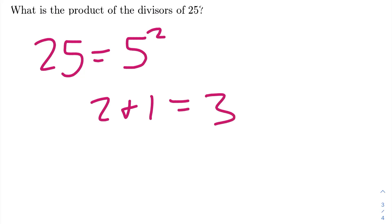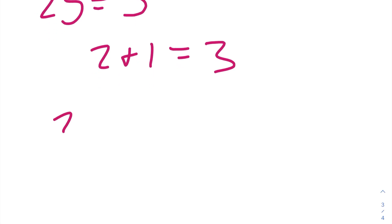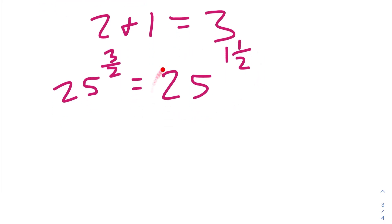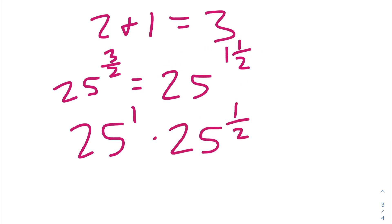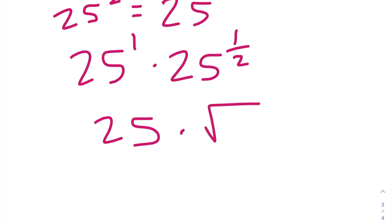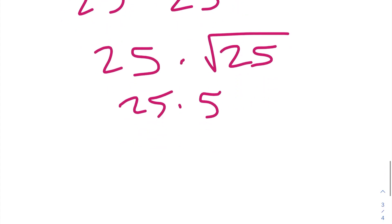If you haven't seen my video on finding how many divisors a number has, I'll leave the link in the description. So we know 25 has 3 divisors. We take 25 to the power of 3 over 2, which is the same as 25 to the power of 1 and one half. We can split this into 25 to the power of 1 times 25 to the power of one half, because when you multiply two numbers with the same base, you add their exponents. 25 to the power of 1 is 25, and 25 to the power of one half is the square root of 25, which is 5. So 25 times 5 gives us our answer of 125.